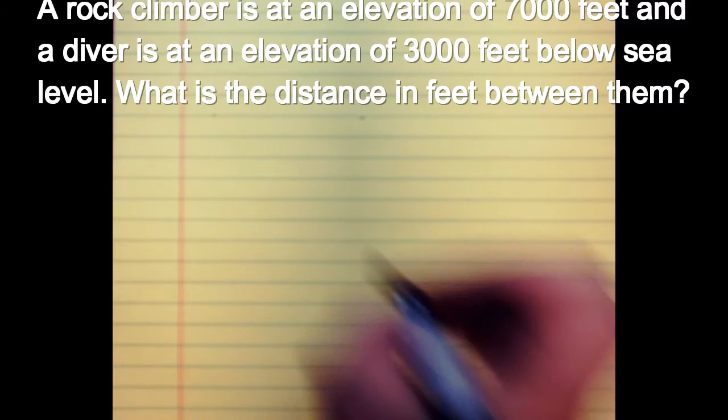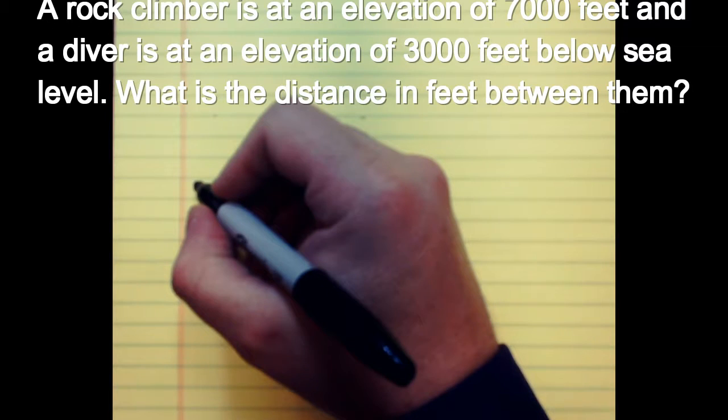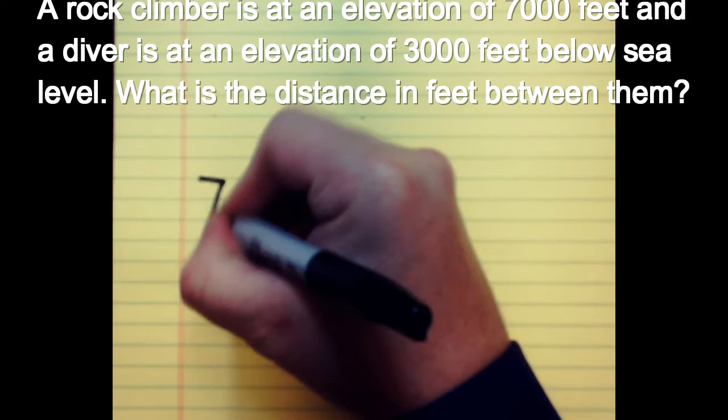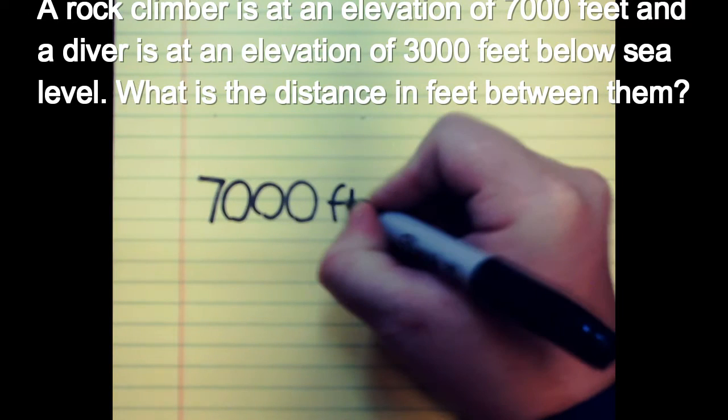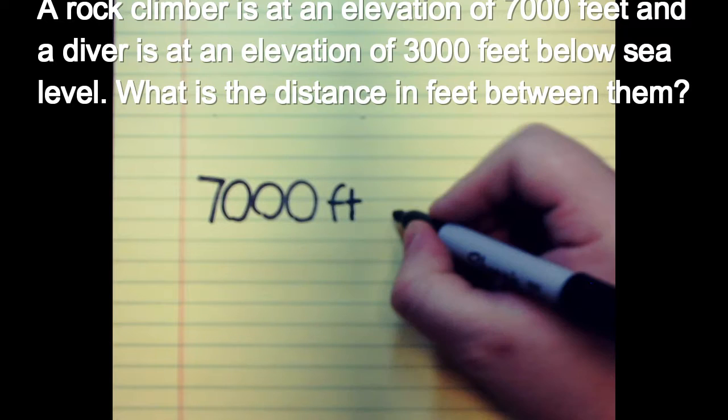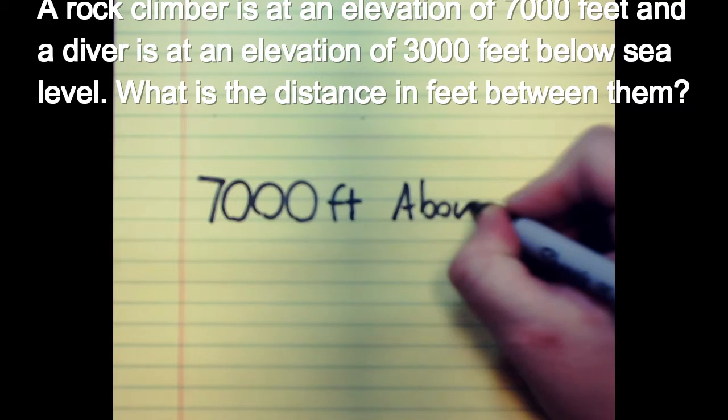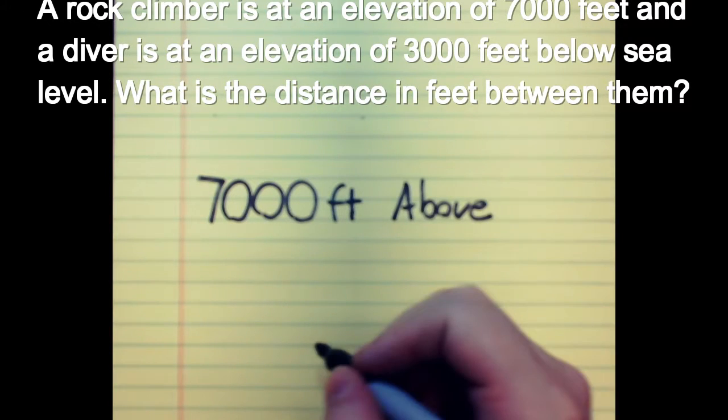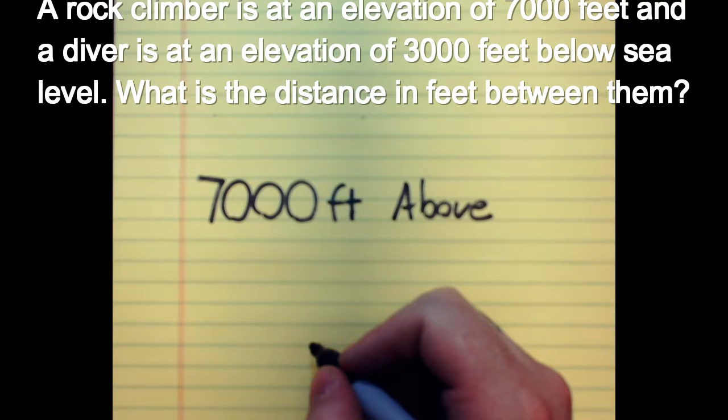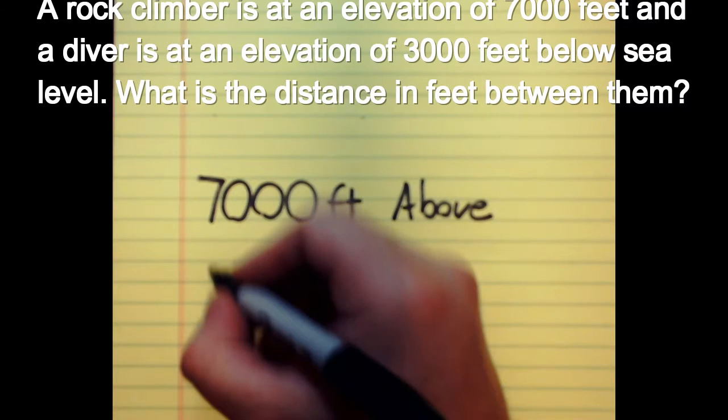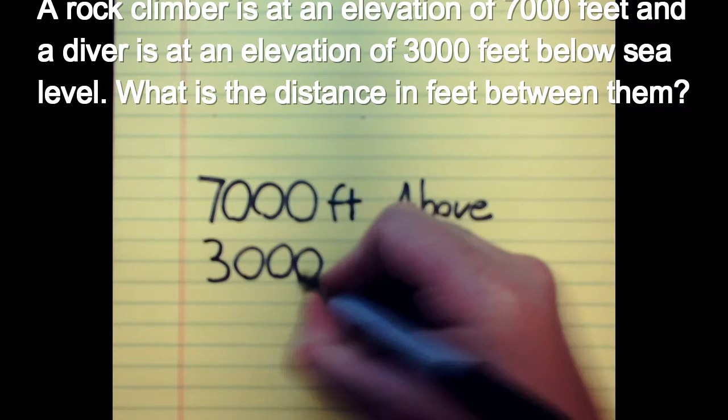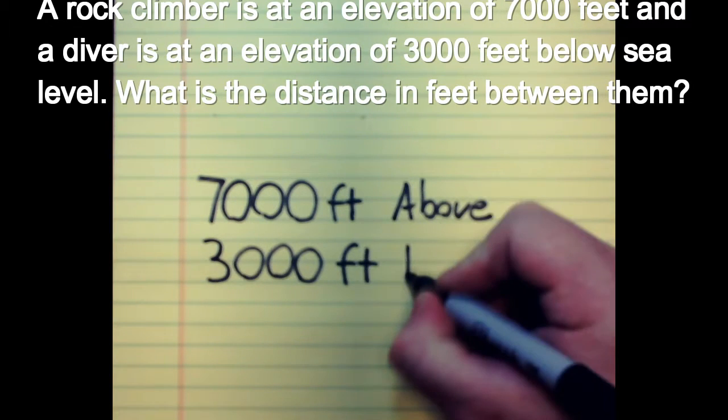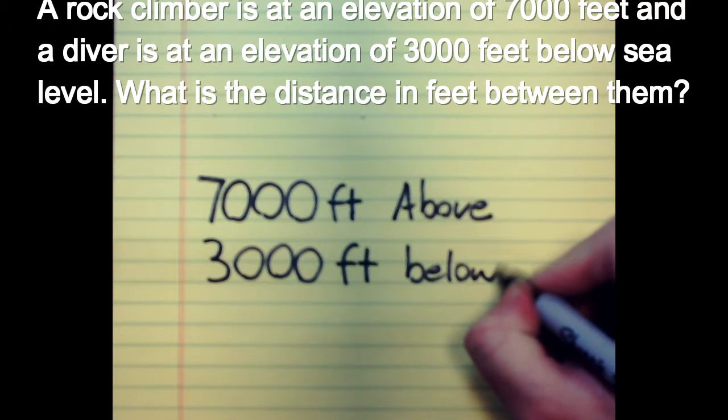So in this one it says we have a mountain climber that is going to be at an elevation of 7,000 feet above sea level. And then we're going to have a deep sea diver that is going to be 3,000 feet below sea level.